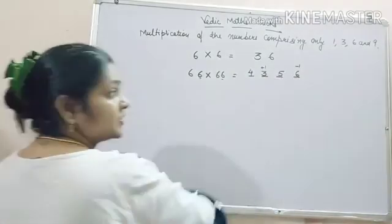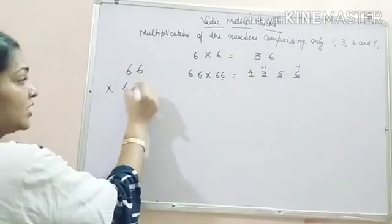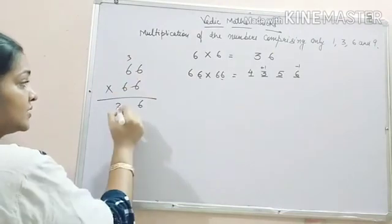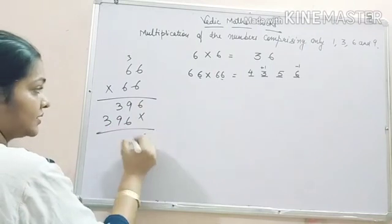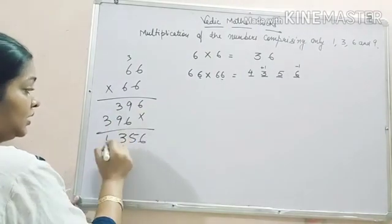You can check your answer by traditional multiplication. 6x6 are 36, 6x6 are 36, 39, 6x6 are 36, 3, 39, 6, 15, 1 carry, 13, 4. Answer is same.